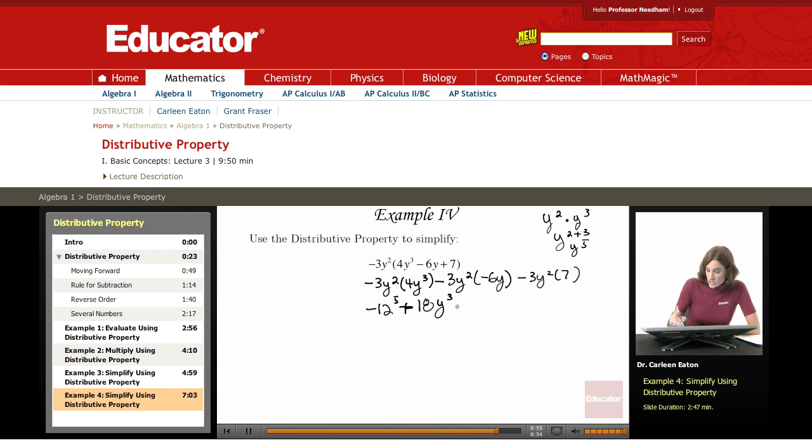And in my last section, I have negative 3 times 7 is negative 21. And then I don't have any y expression over here, so it's just y squared.